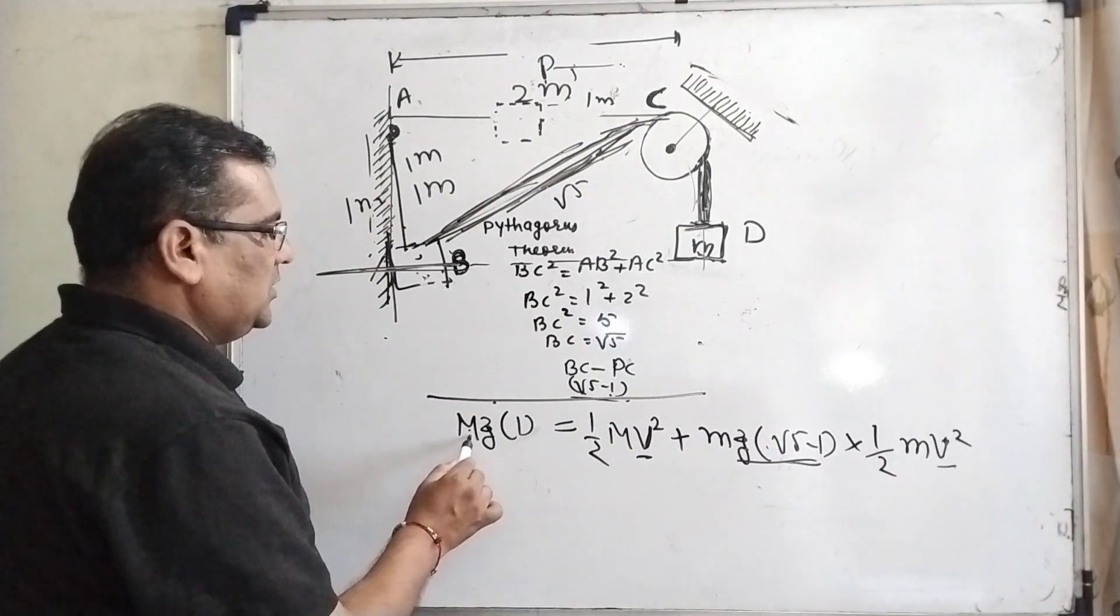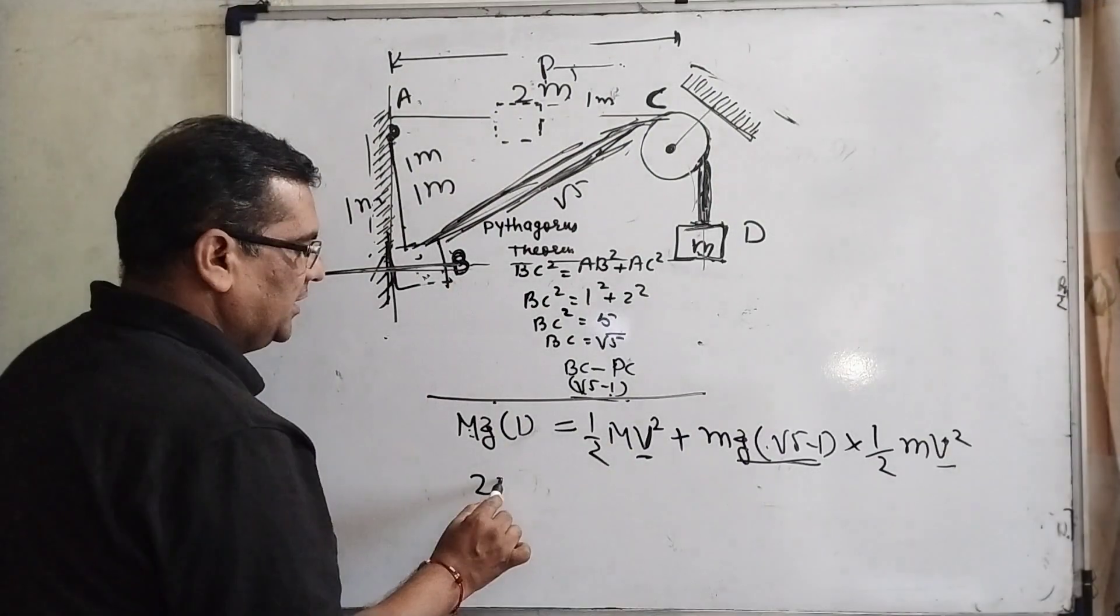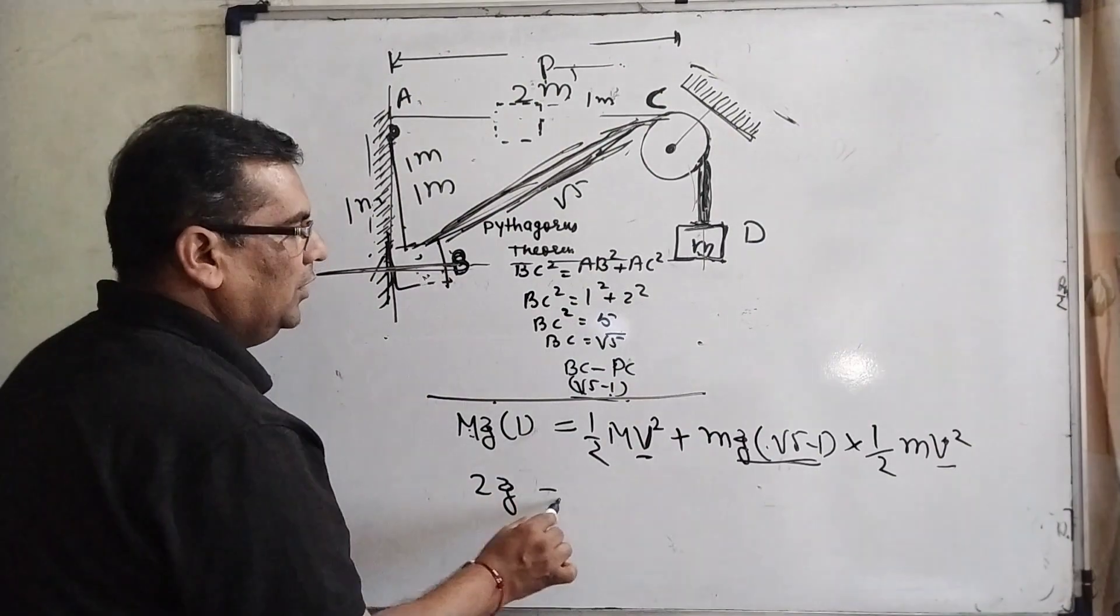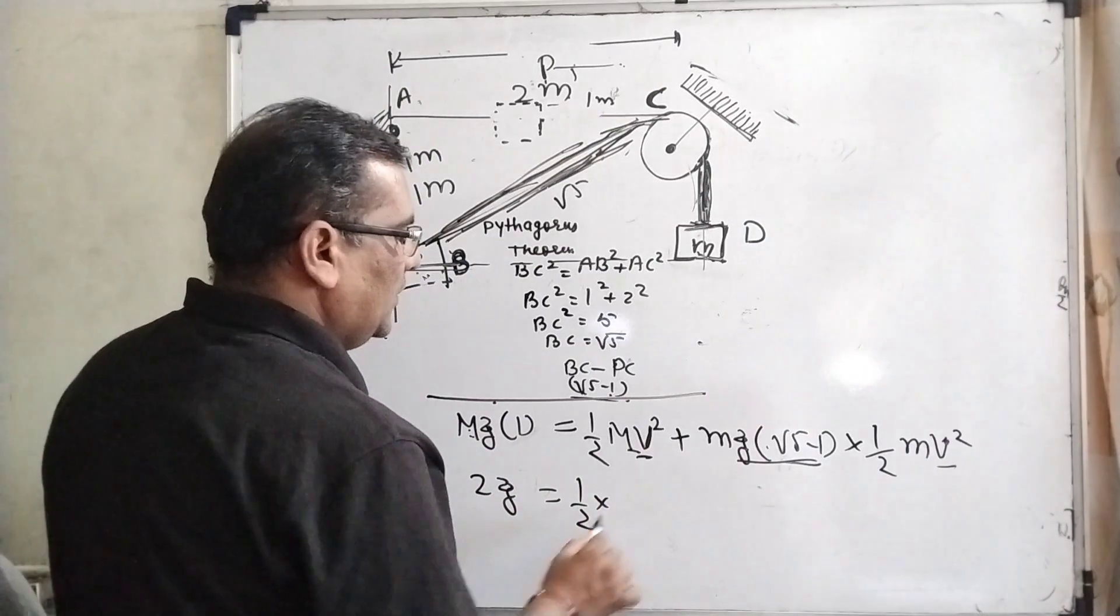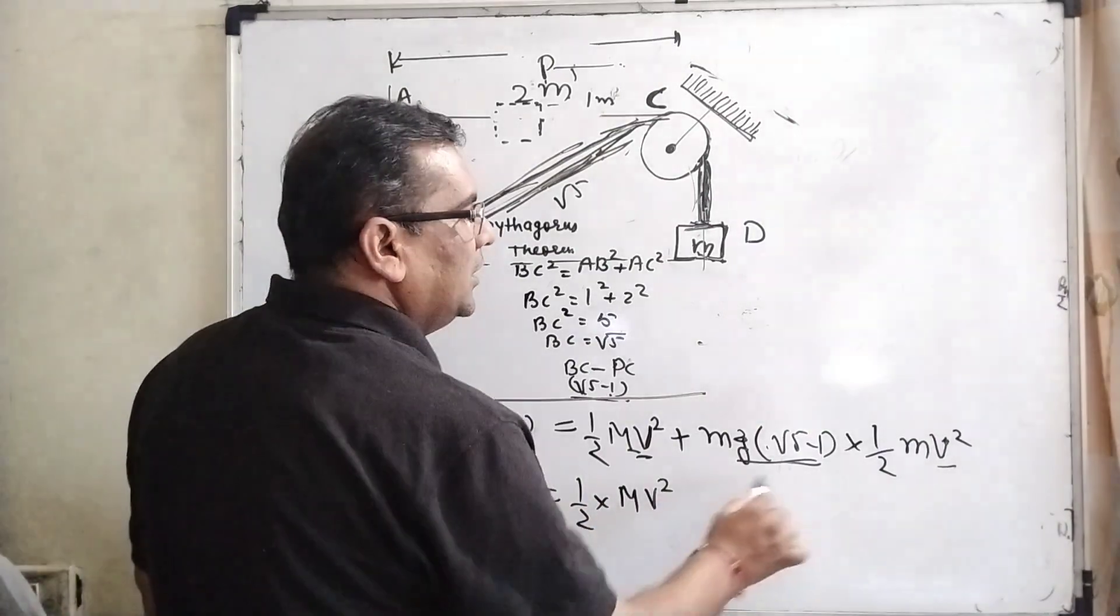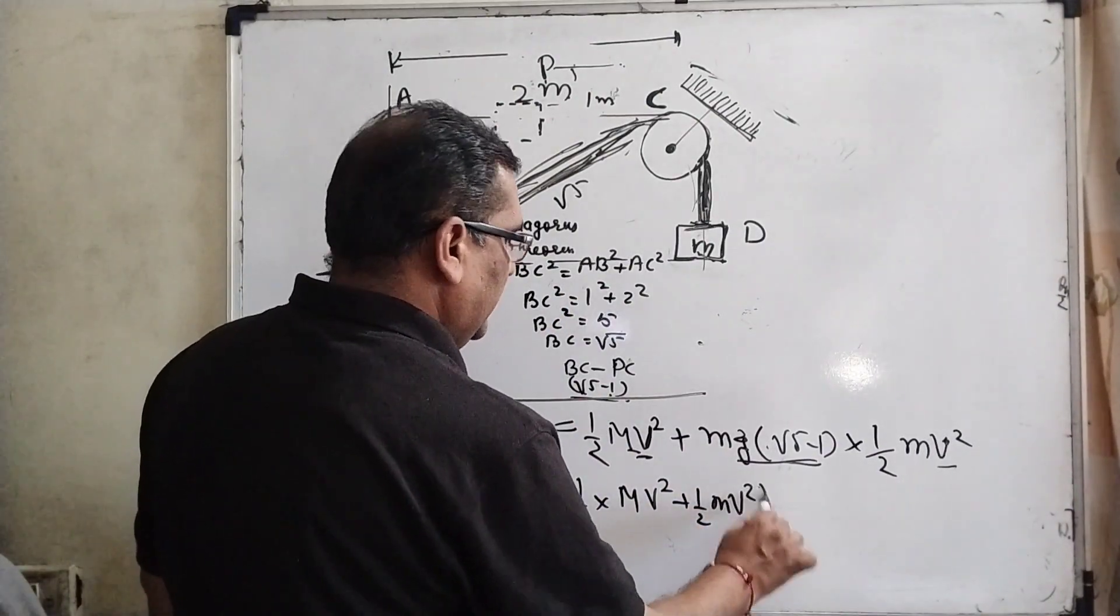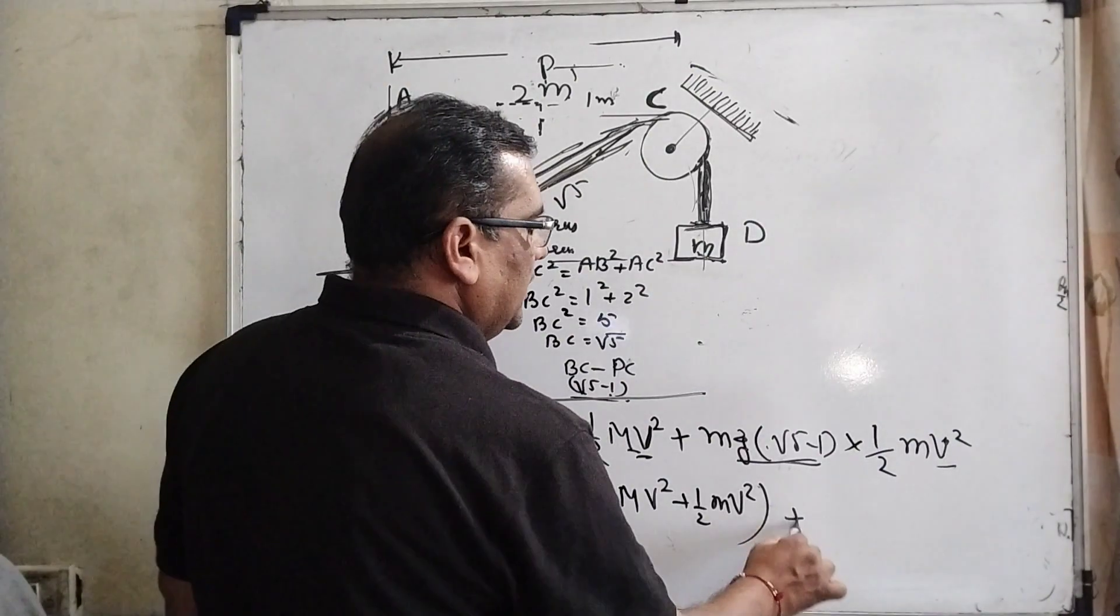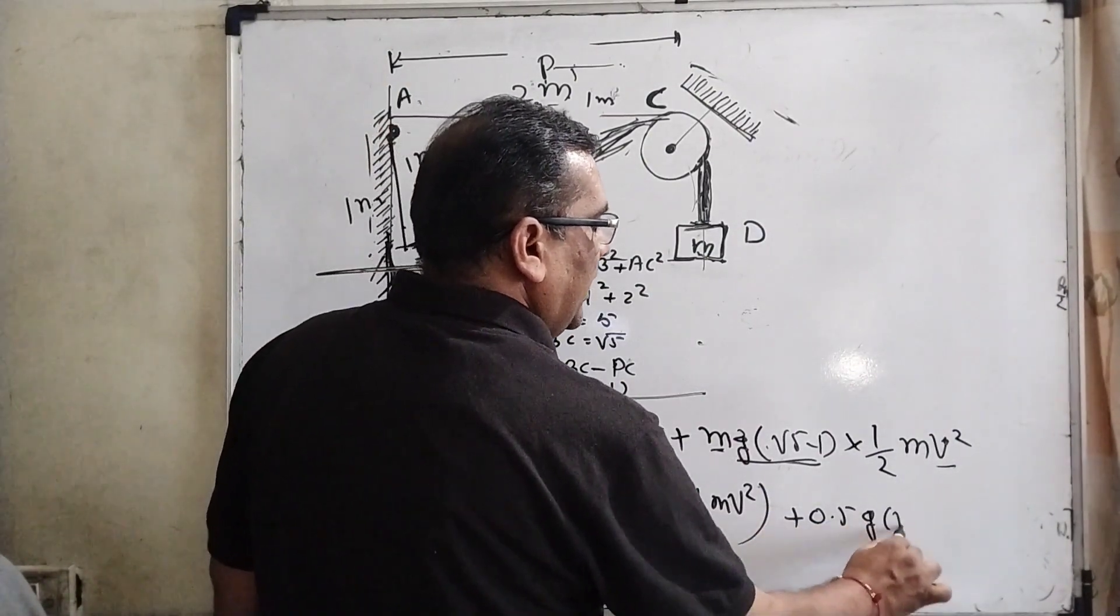And its kinetic energy is small m times v squared, same because they travel with the same velocity. Now what is the mass of this block? So here we can take 2, 2 kilograms is given, g equals, and here 1 by 2